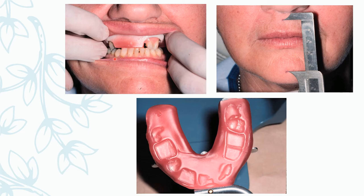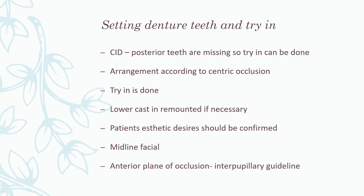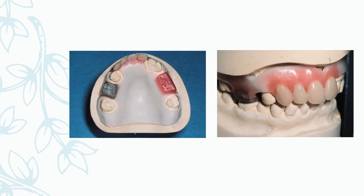With a few teeth remaining, we create a nice gap so the tray comes out easily with no undercut. Record bases and occlusal rims are fabricated. The VDR is established, checked, and a bite is taken. In the conventional immediate denture, since the posterior teeth are missing, a try-in can still be done as some teeth are still present. The arrangement is according to centric occlusion and the lower cast is remounted if required.